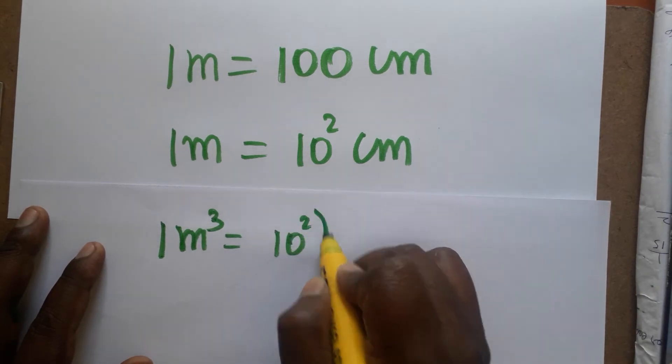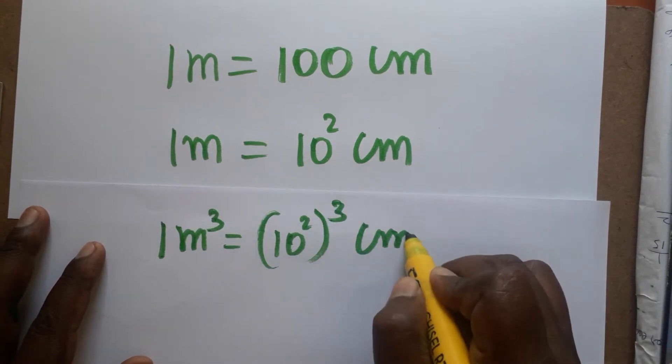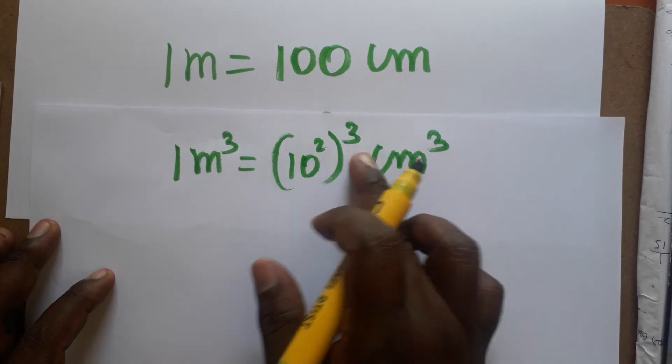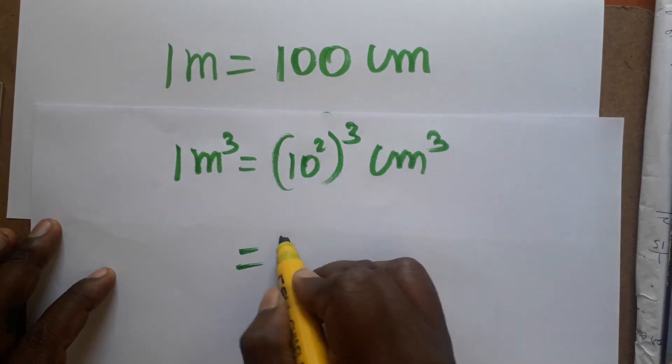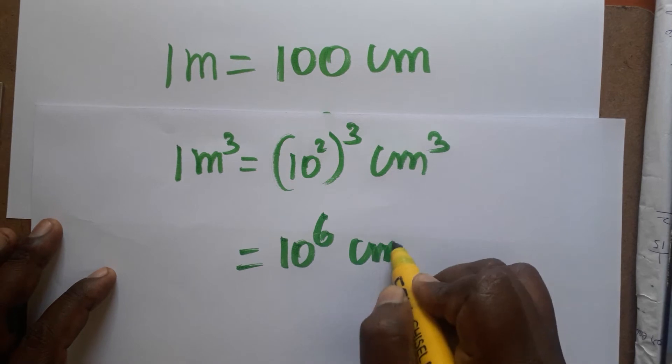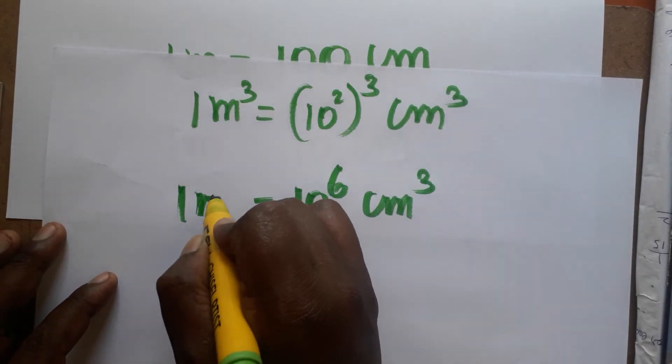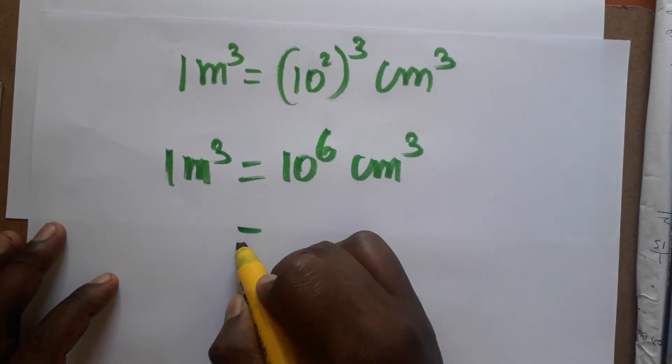Equal to 10 squared whole cube, centimeter cube. So 10 power squared whole cube will get as 2 into 3, will get 6. So 10 power 6 centimeter cube is equal to 1 meter cube. 10 power 6, I...